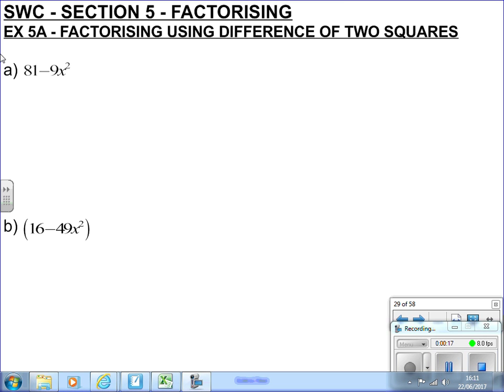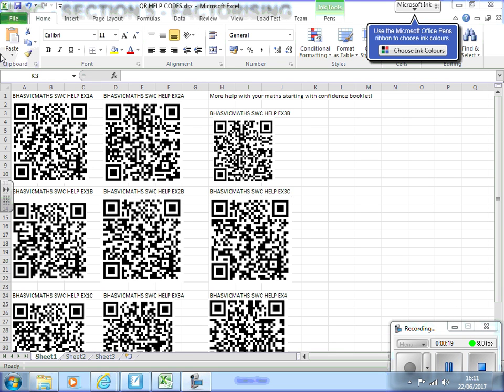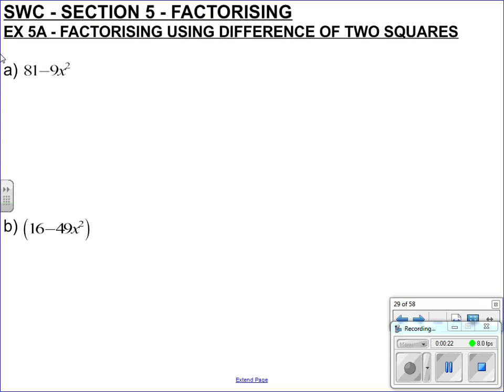Hopefully we're familiar with this idea of a squared take b squared. It's a plus b, a subtract b. This is difference of two squares.